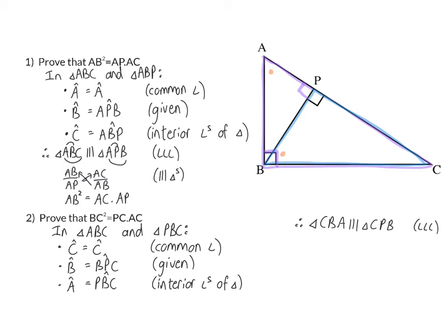From here, once again, we need to identify the correct pairs of ratios. So we will have CB over CP equals CA over CB and my reason, similar triangles. And when I now cross multiply, I will have CB squared is equal to CA times CP.